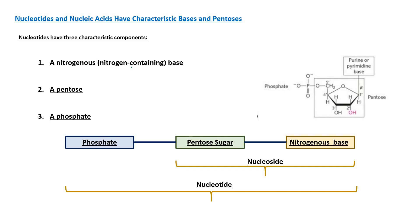Now let's discuss the three components of a nucleotide. The first component is a nitrogen-containing compound called a nitrogenous base. The second component is a pentose — a sugar molecule. The third component is phosphate, also called phosphoric acid.